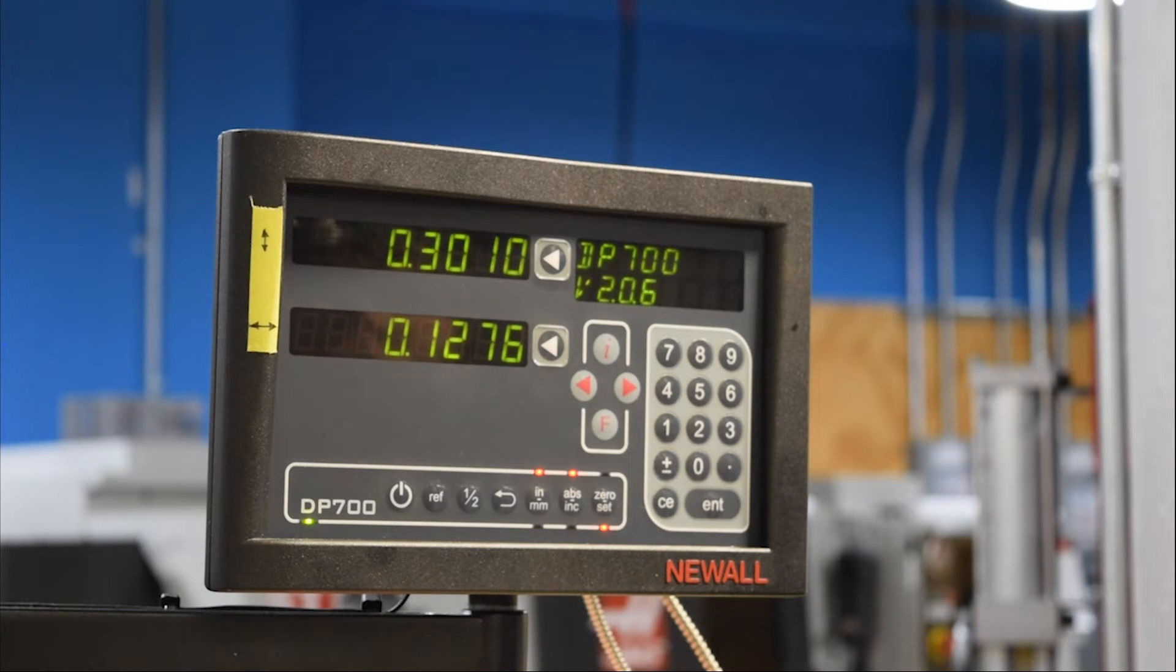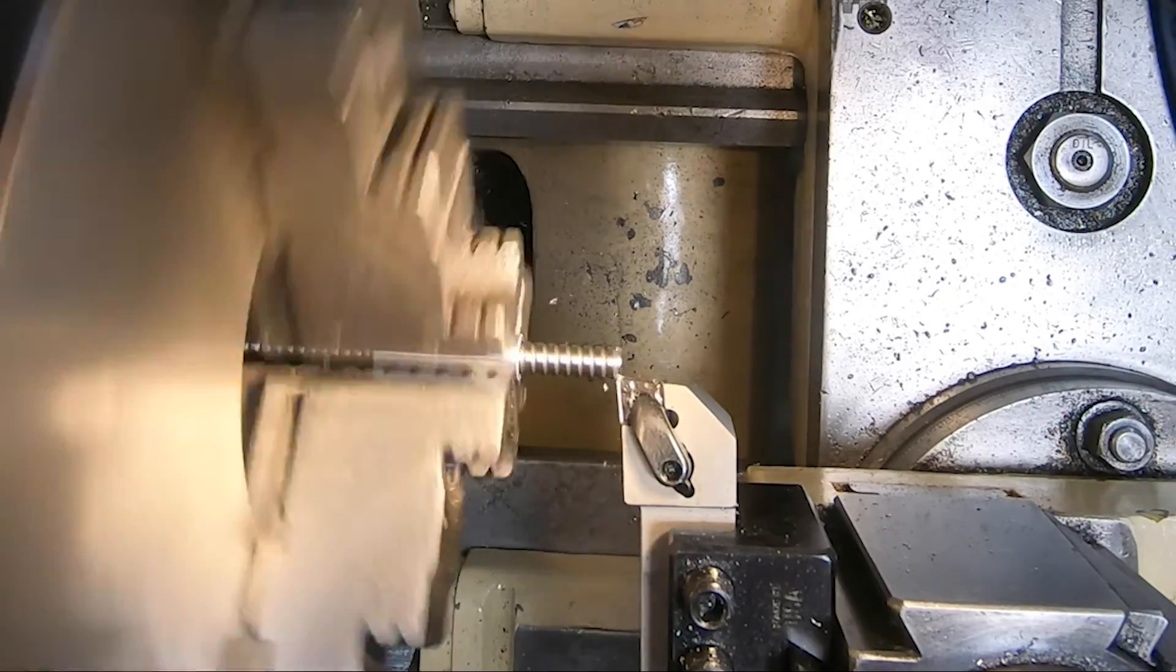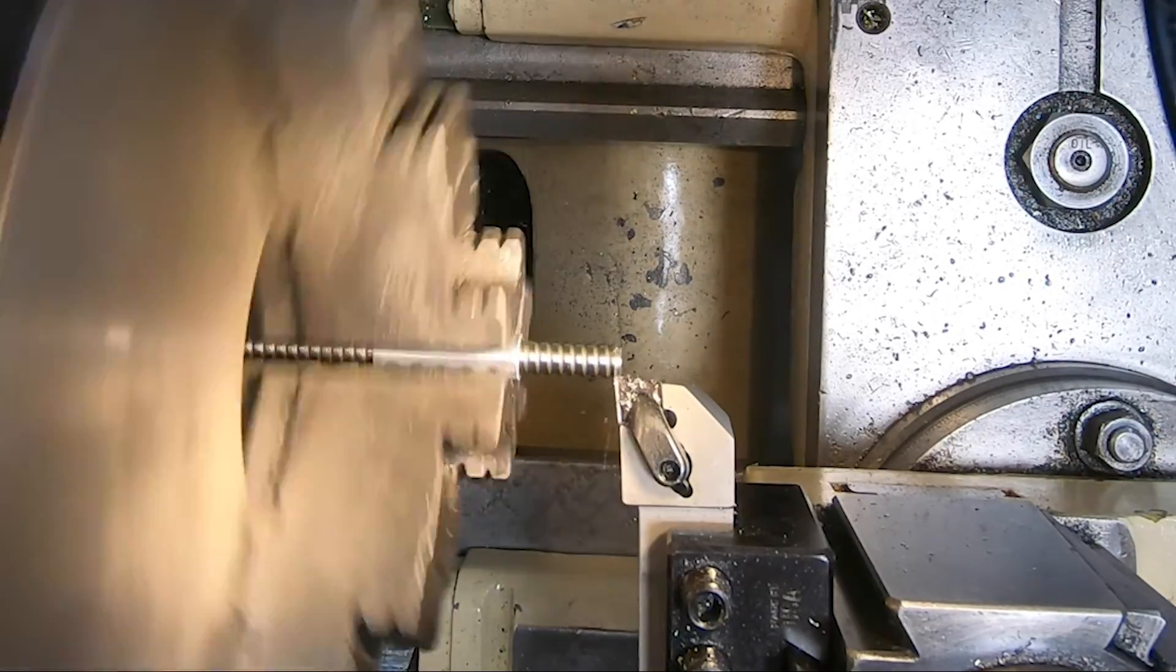So, we're taking a 35 thou depth of cut here, which is larger than the nose radius the insert, and it's also going to cut deeper than the case depth, so we'll get right to that middle, softer metal in one pass.